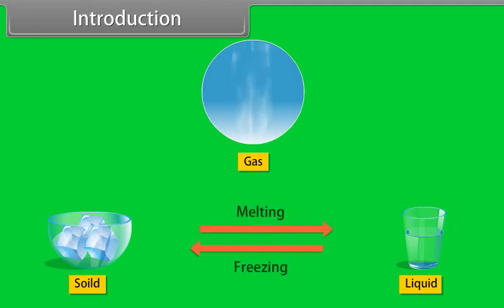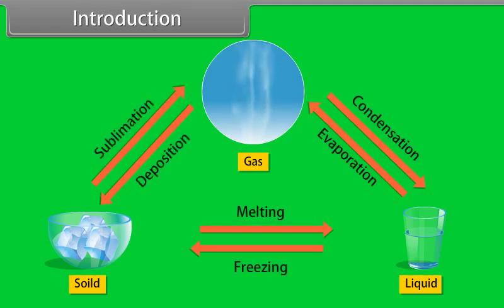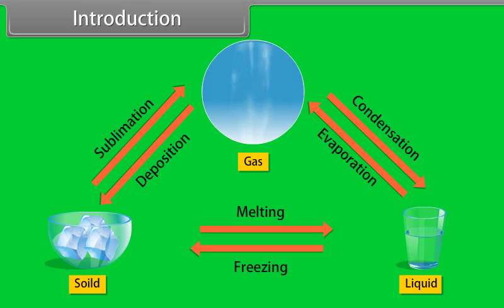Equilibria are solid and liquid, liquid and gas, solid and gas. In homogeneous equilibria, the reactants and the products are in the same phase, whereas in heterogeneous equilibria, the reactants and the products are in different phases.